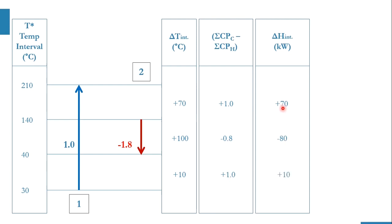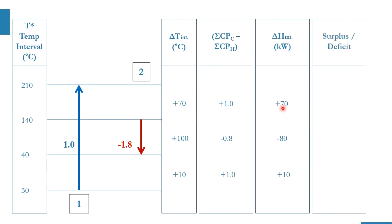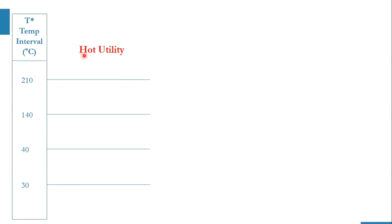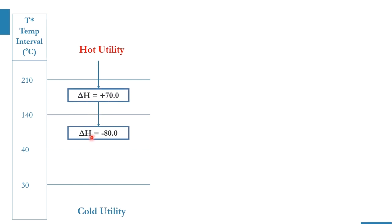A positive delta H means the interval has a deficit — heat needs to be supplied. A negative delta H means surplus. This completes the first major part of the problem table approach. We draw the temperature intervals again: hot utility is required above 210°C, and the delta H values are plus 70, minus 80, and plus 10 in the respective intervals.